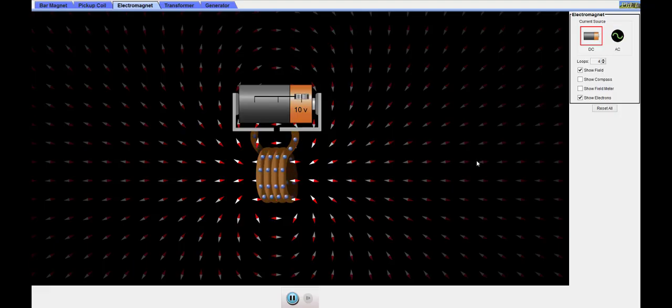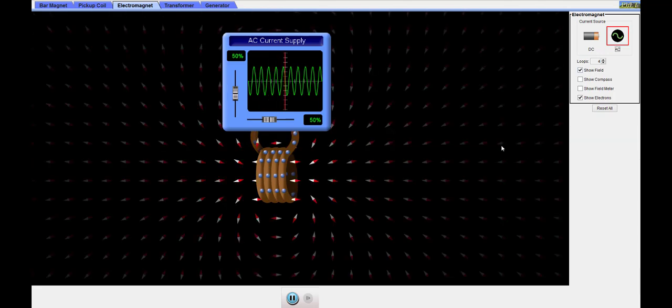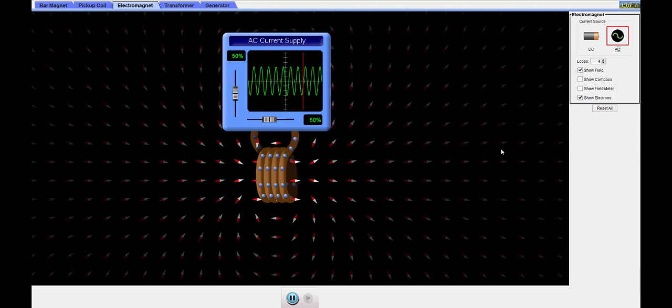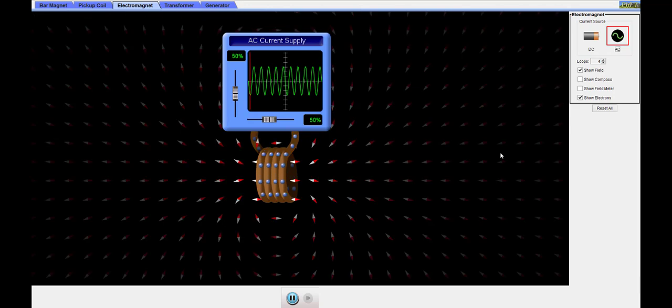Finally, we've been looking at DC, or direct current flow, in a solenoid, which means that the current flows in a fixed direction. With AC, or alternating current flow, the direction of the current continuously swaps, flowing one way and then the opposite direction.